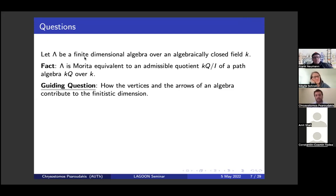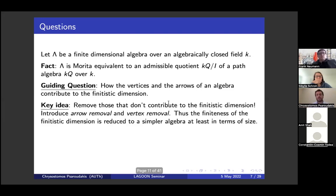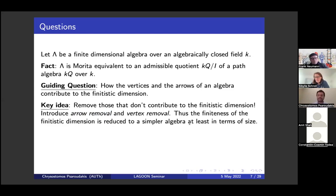Since lambda is a finite dimensional algebra over a field, I will work with an admissible quotient of a path algebra, KQ modulo I. The basic question is: we would like to understand how the vertices and arrows of an algebra contribute to the finitistic dimension. The idea is to make a kind of surgery — to throw out things that don't play any role with respect to the finitistic dimension. Based on this idea, we introduce two operations. At least in terms of size, if you throw out some things, the finiteness of the finitistic dimension is reduced to at least a simpler algebra.